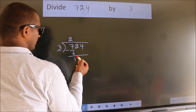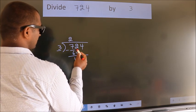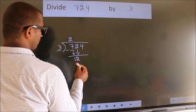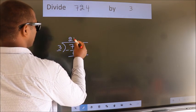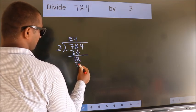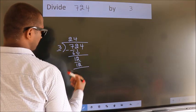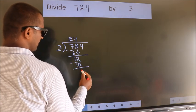After this, bring down the beside number. So 2 down, so 12. When do we get 12? In 3 table, 3 times 4, 12. Now we subtract. We get 0.